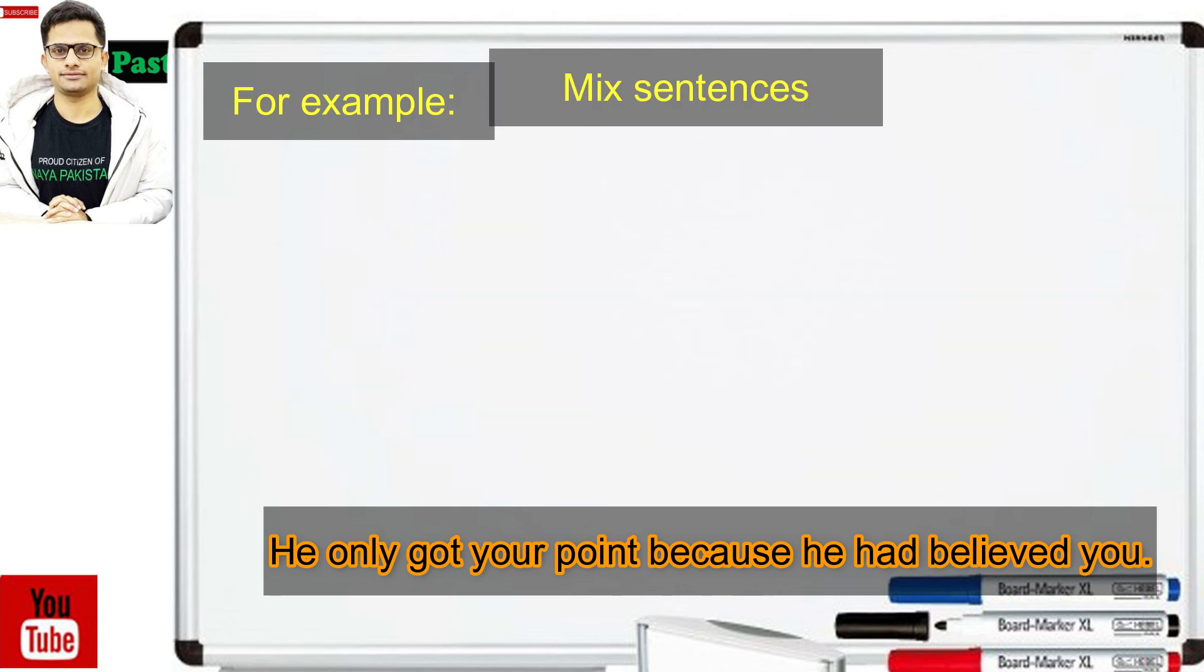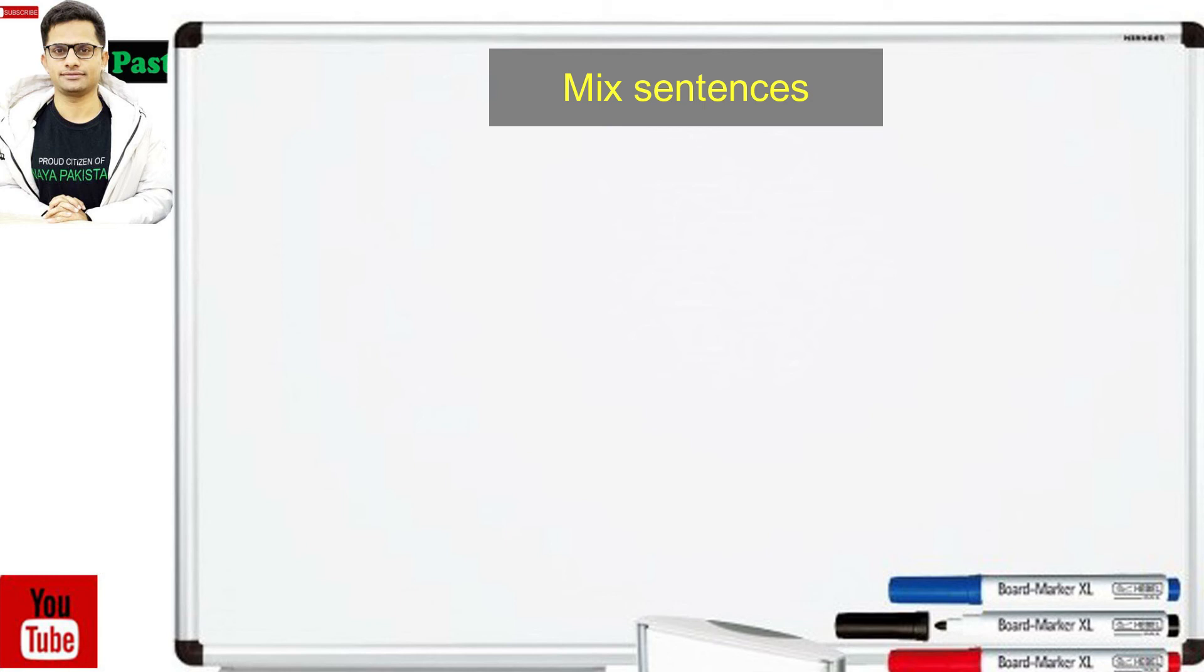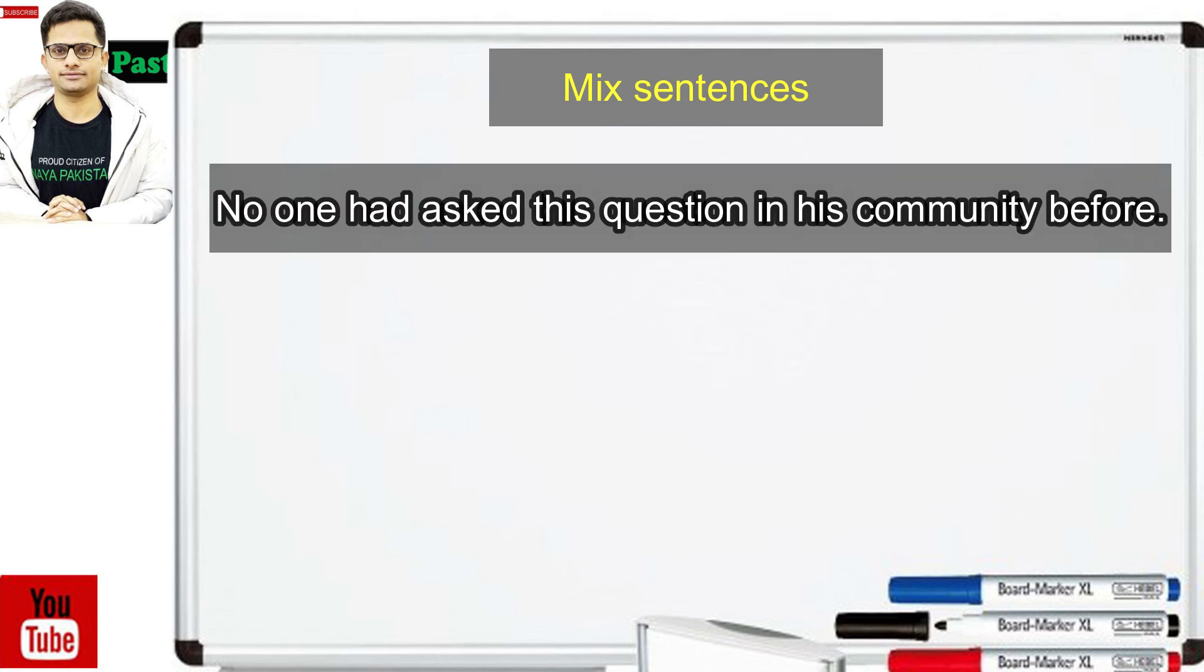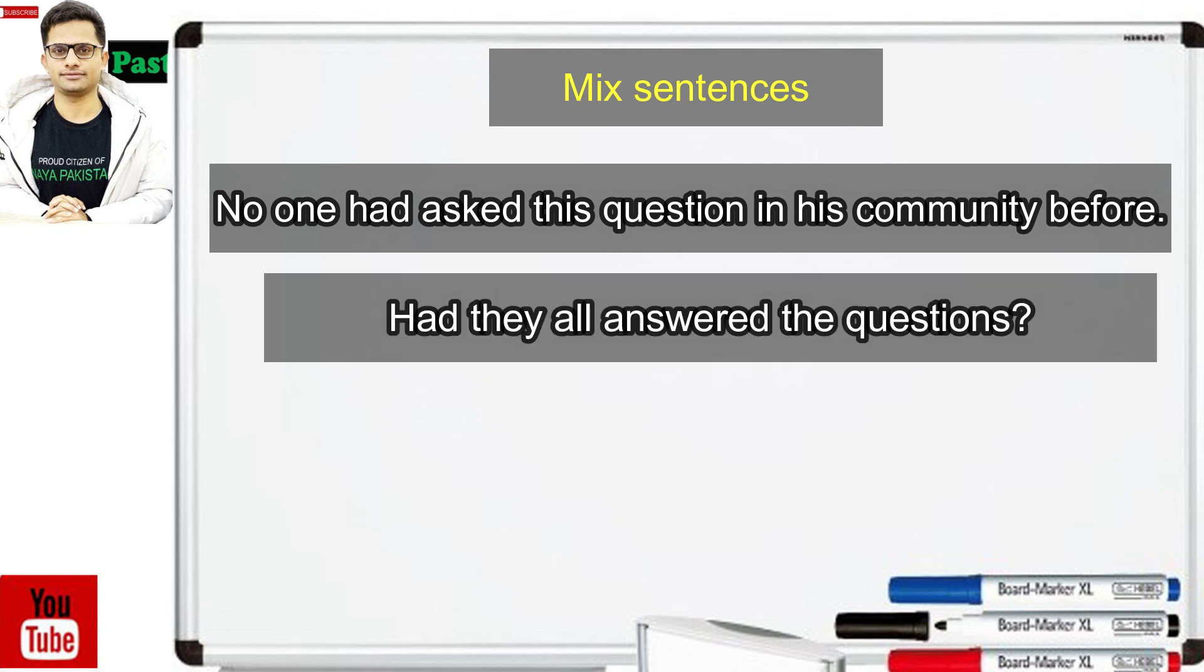Now look at some mixed sentences for practice to improve your English. First sentence: no one had asked this question in his community before. اس سے پہلے کسی نے بھی اس کی برادری میں یہ سوال نہیں کیا تھا. Next sentence: had they all answered the questions. کیا وہ سارے سوالوں کے جوابات دے چکے تھے.